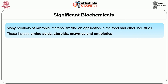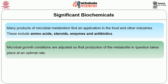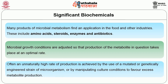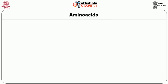Microorganisms are also useful in the production of significant biochemicals. Many products of microbial metabolism find application in the food and other industries. These include amino acids, steroids, enzymes and antibiotics. Microbial growth conditions are adjusted so that production of the metabolite in question takes place at an optimal rate. Often an unnaturally high rate of production is achieved by the use of a mutated or genetically engineered strain, or by manipulating the culture conditions to favor excess metabolite production.